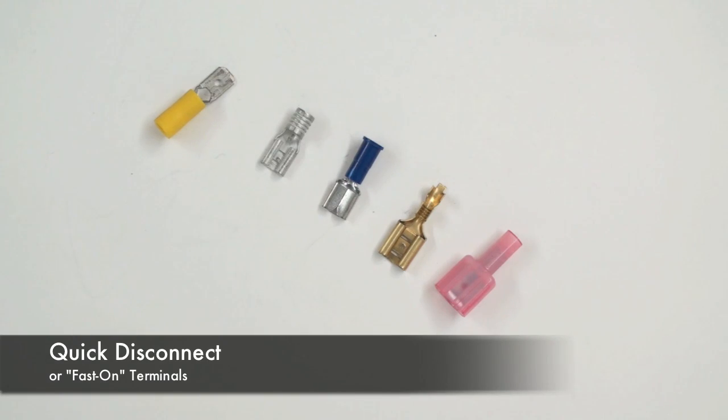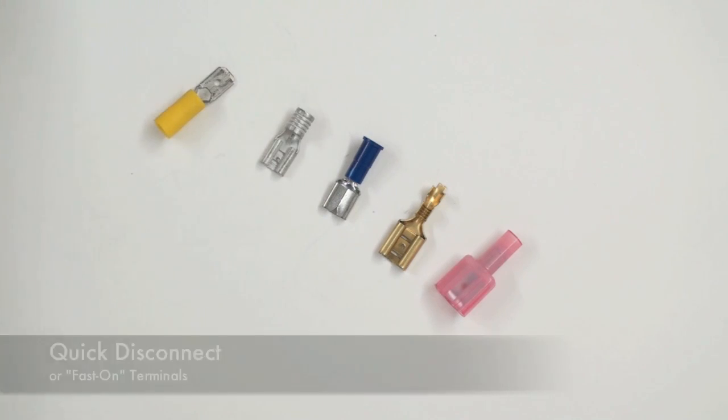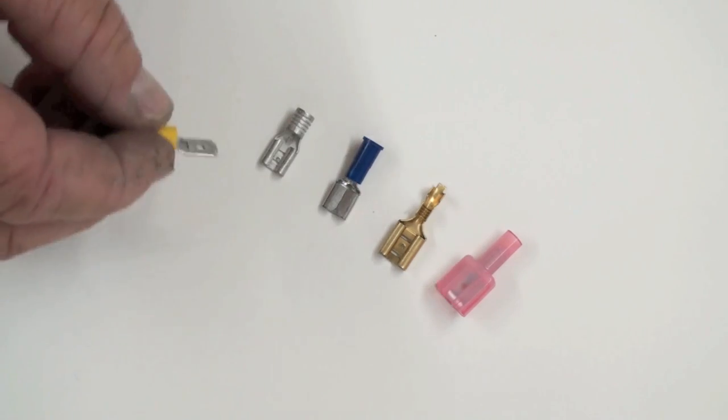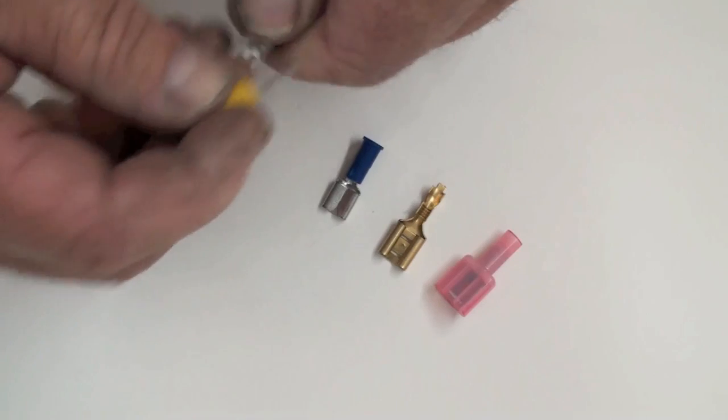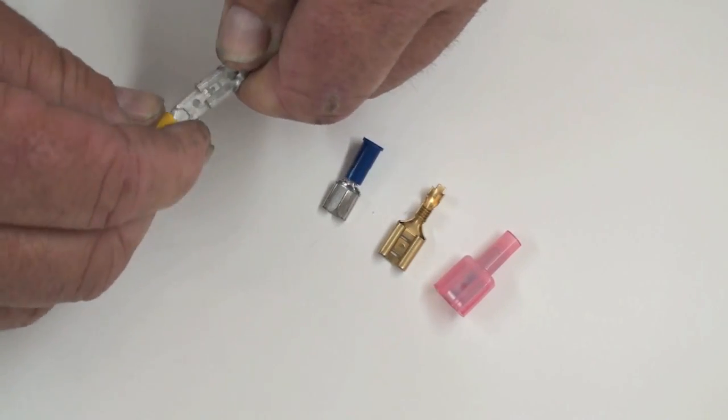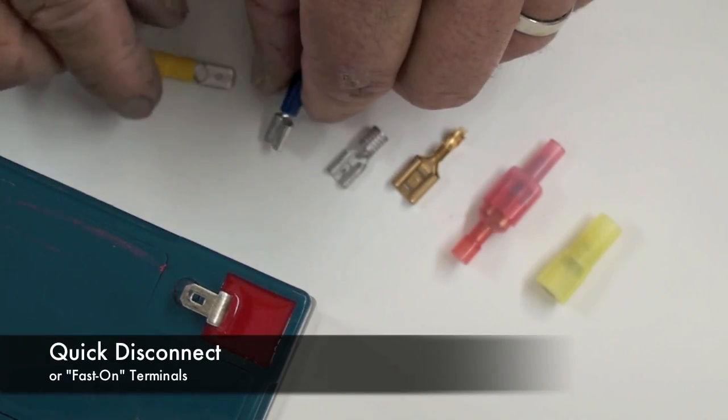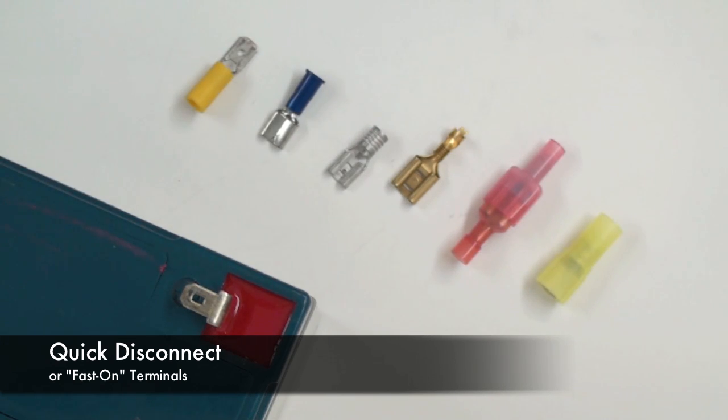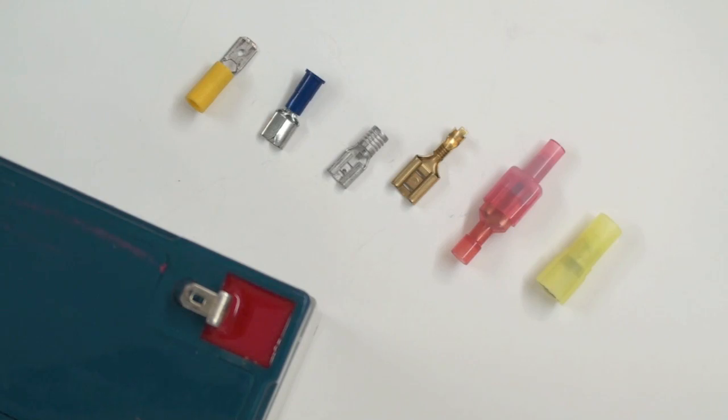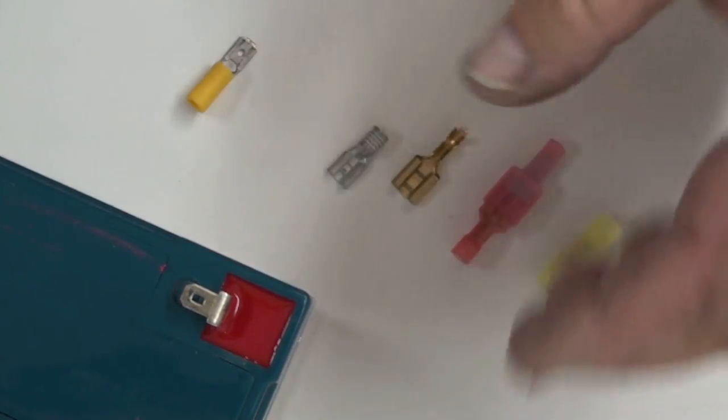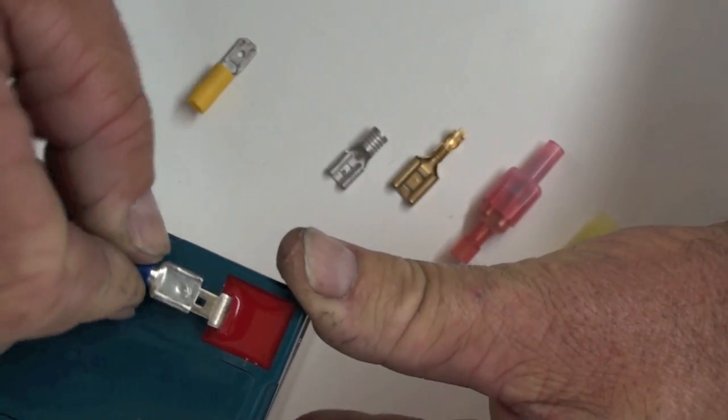These are known as quick disconnect terminals and they come in different colors for the different sized wires. You would simply attach the wire by crimping, and they come in a male and a female and allow for a very quick connection or disconnection. They come in a variety of different sizes and the color denotes the different wire size. These are non-insulated and typically crimp on. These are insulated. You often see them in applications where you slide on the fast-on terminal on a battery.